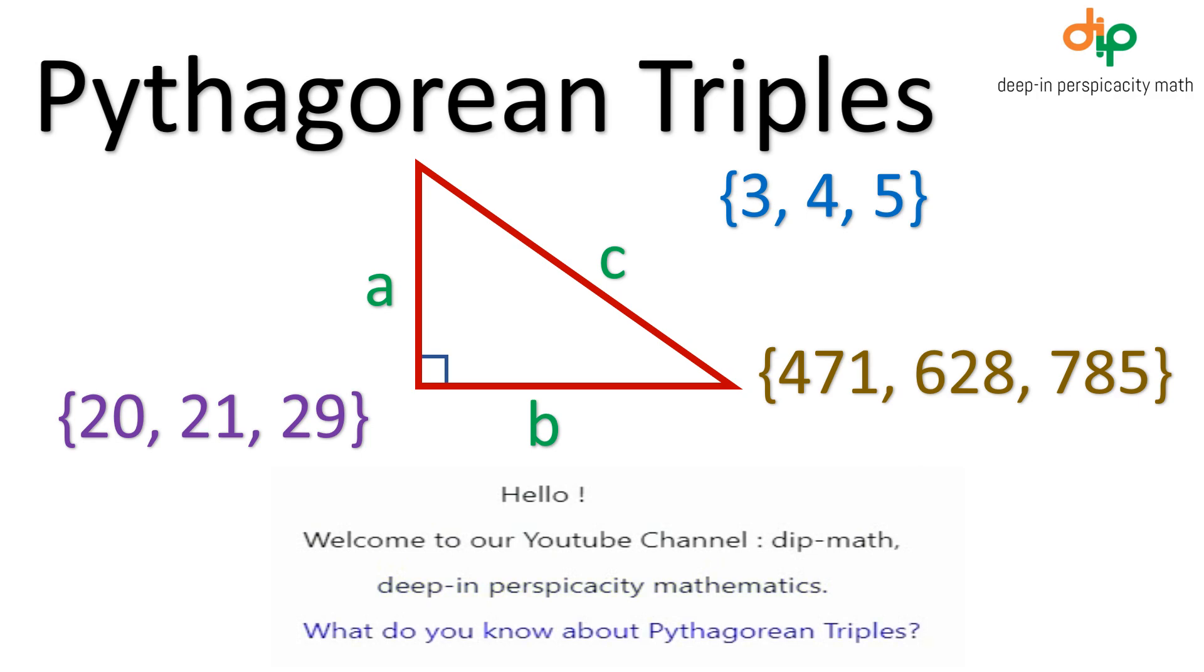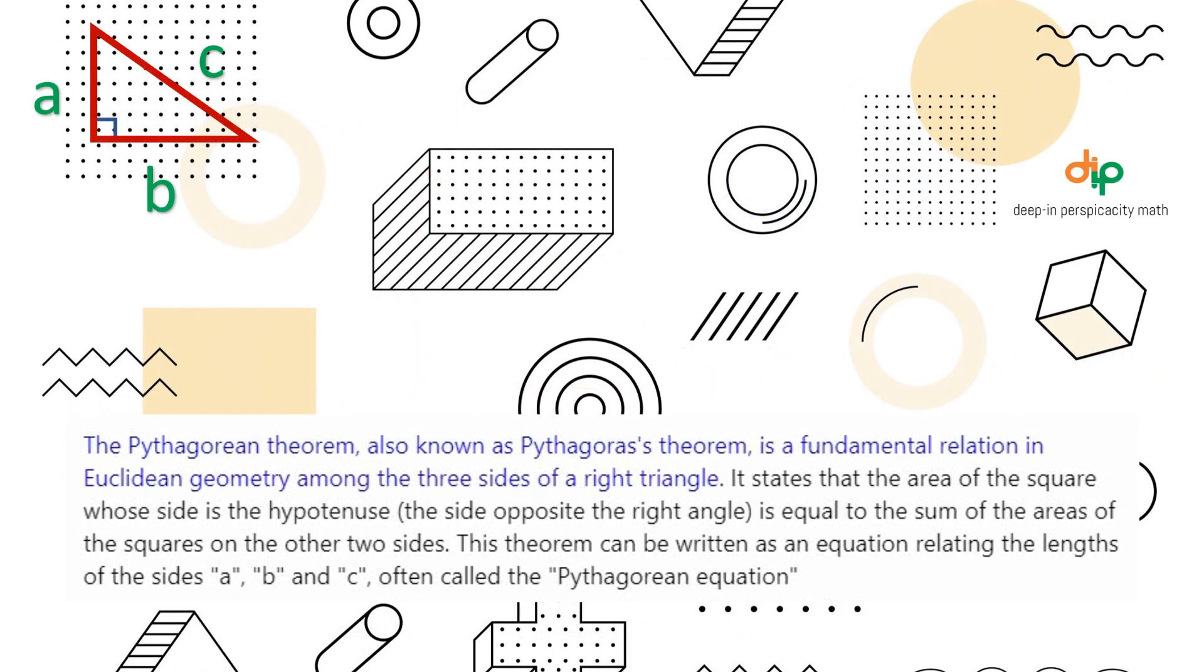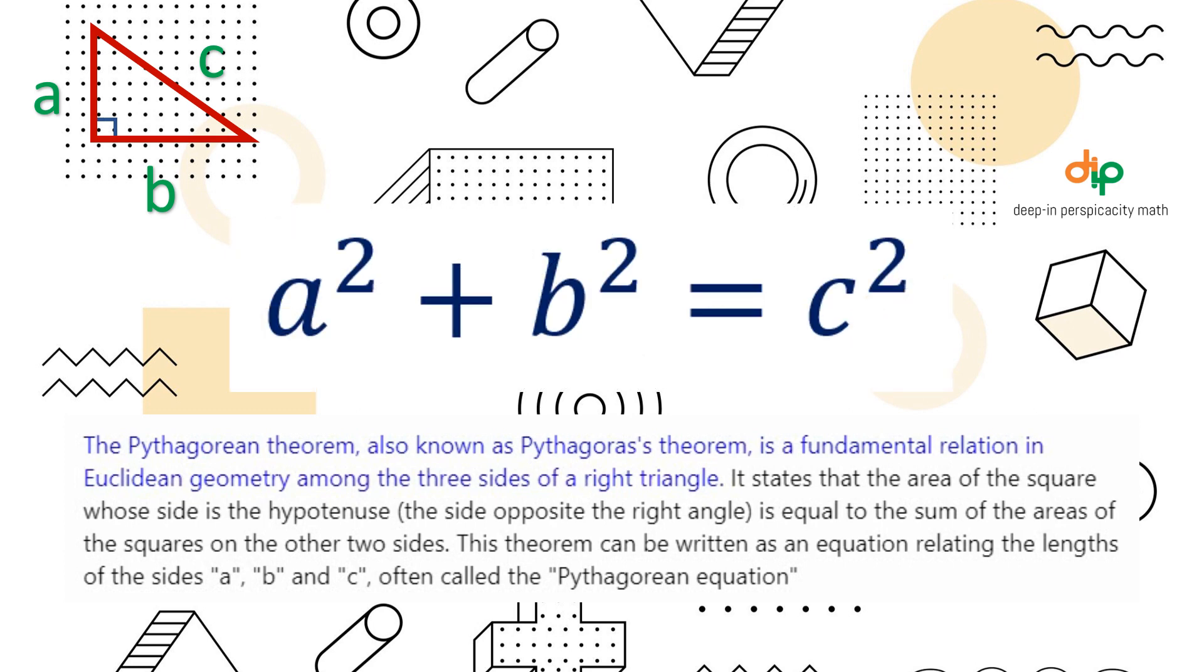What do you know about Pythagorean triples? The Pythagorean theorem, also known as Pythagoras' theorem, is a fundamental relation in Euclidean geometry among the three sides of a right triangle. It states that the area of the square whose side is the hypotenuse, the side opposite the right angle, is equal to the sum of the areas of the squares on the other two sides.